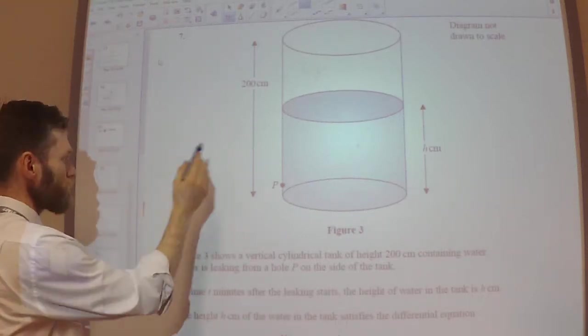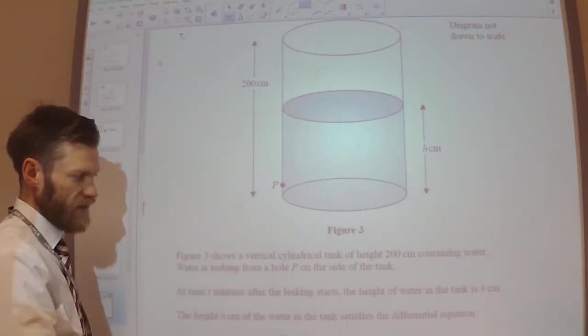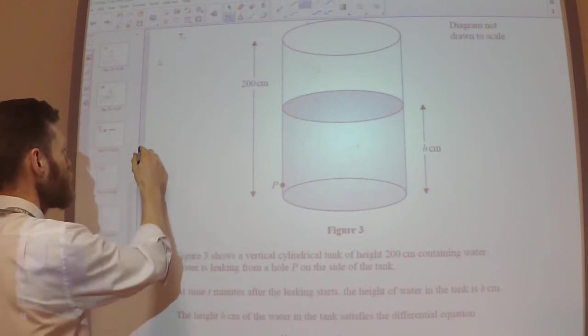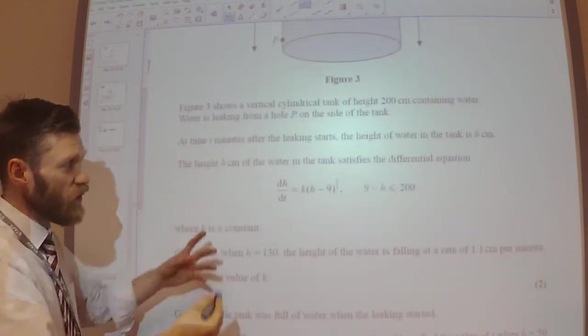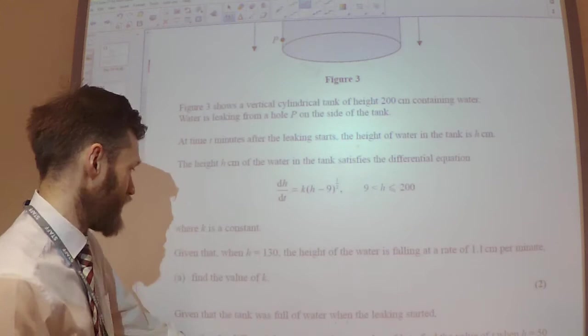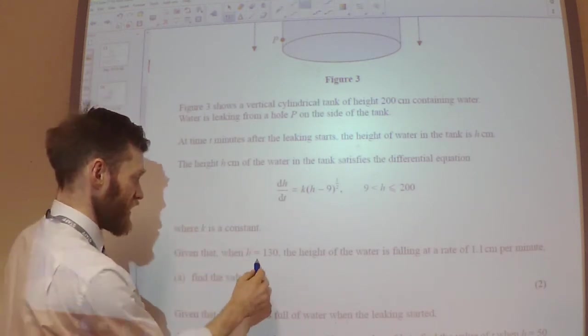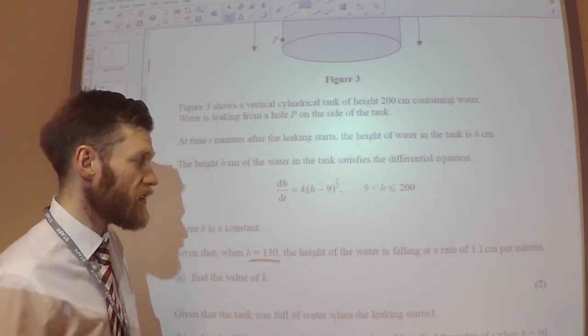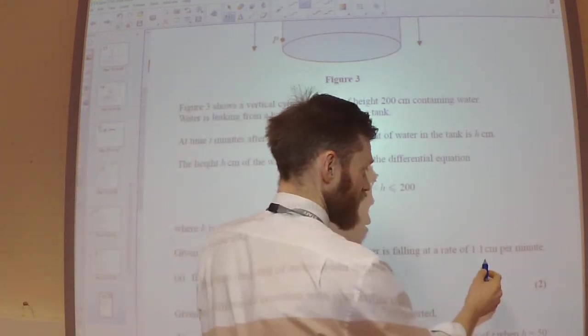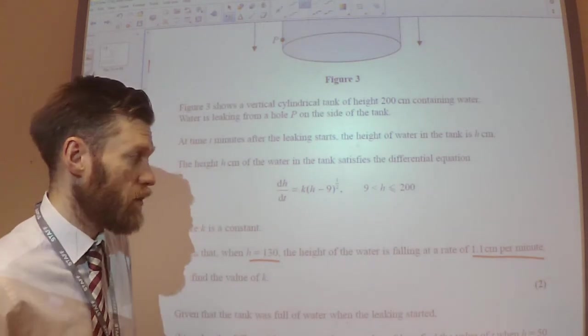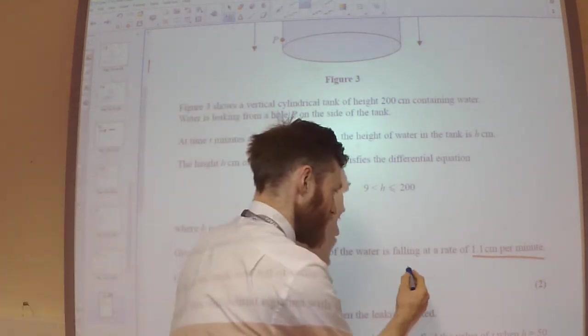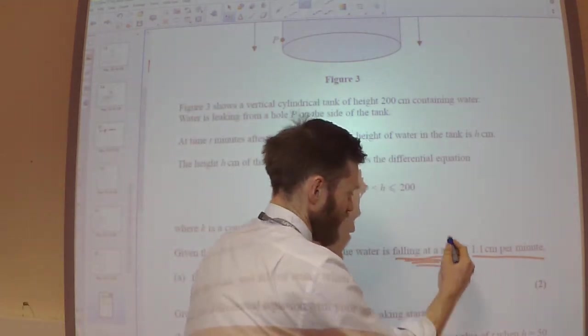Okay, try now seven. We've got a cylindrical tank with some water leaking out of it. We were told it satisfied this differential equation. It says that when H is 130, the height of the water is falling at a rate of 1.1 centimeters per minute. So it's falling at a rate.